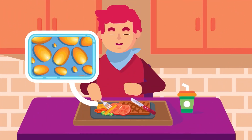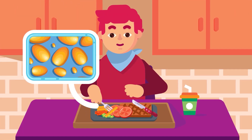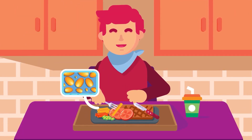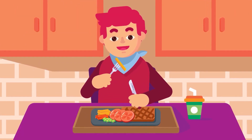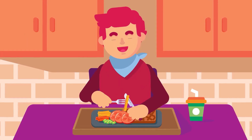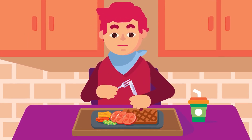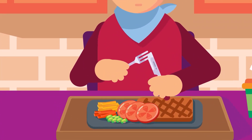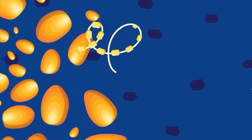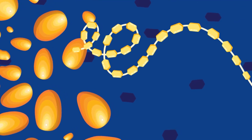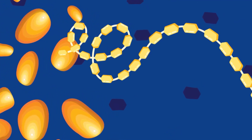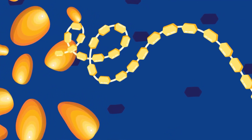Starch is one of the most important sources of carbohydrates in our food. It occurs commonly in vegetable foods such as cereals, potatoes, etc. However, starch is not formed or stored by animals. Starch is made up of a very large number of glucose molecules condensed together to form chains of glucose units.